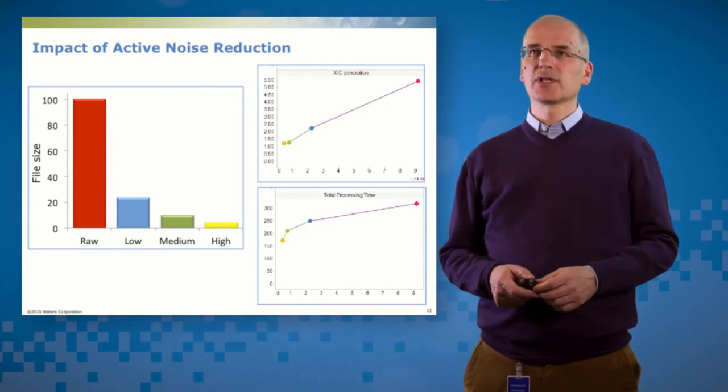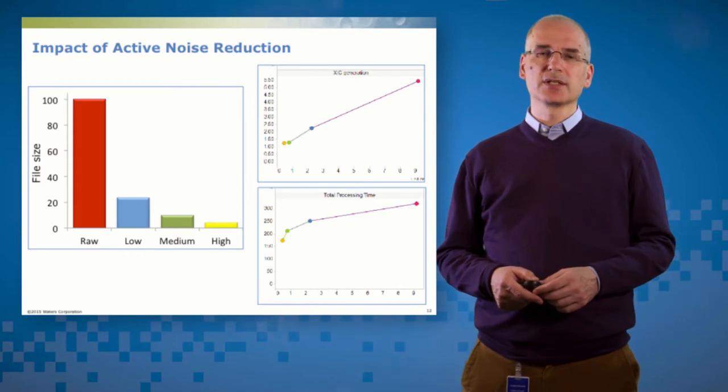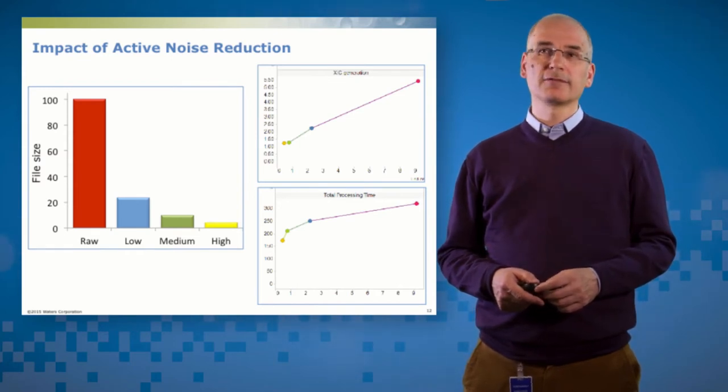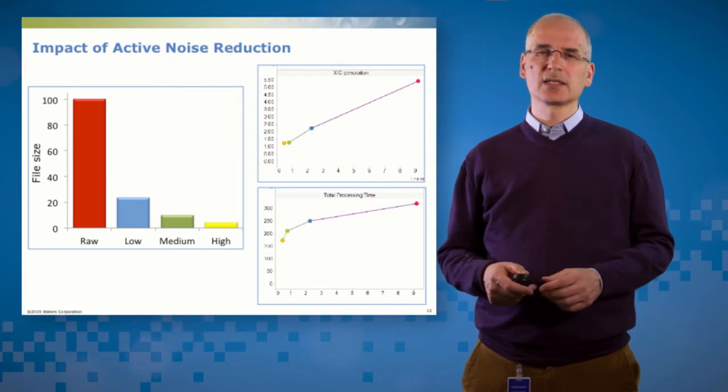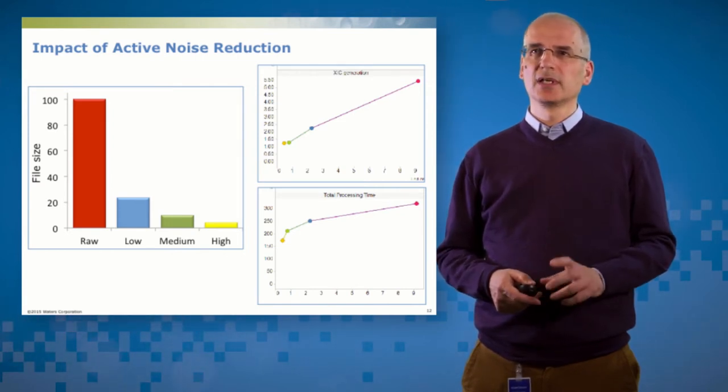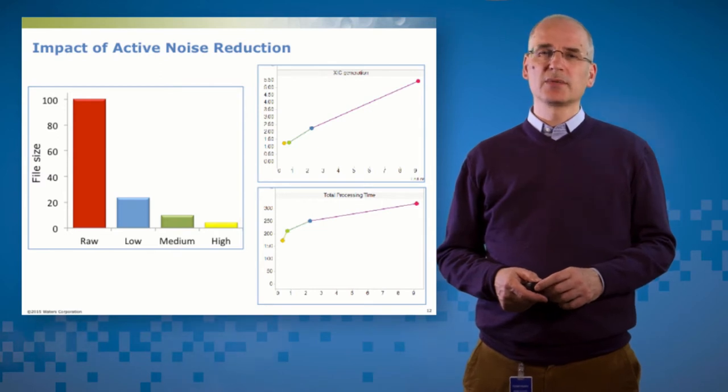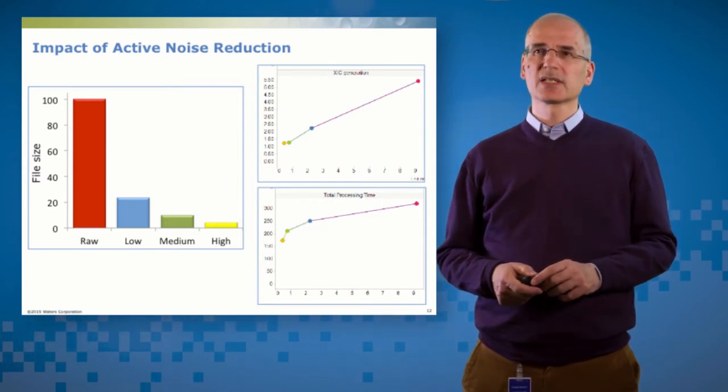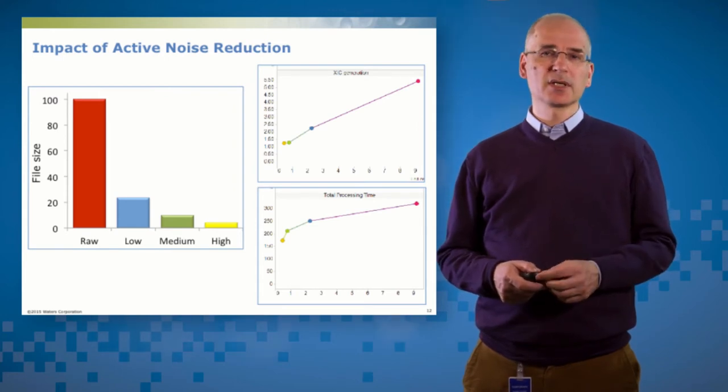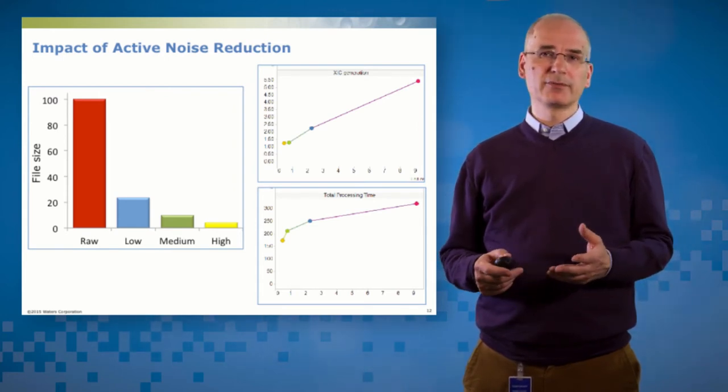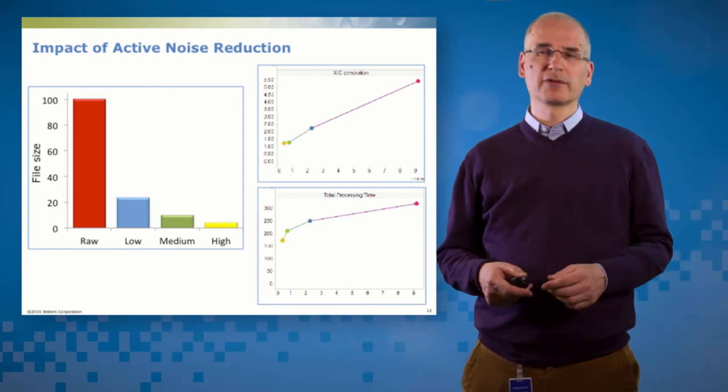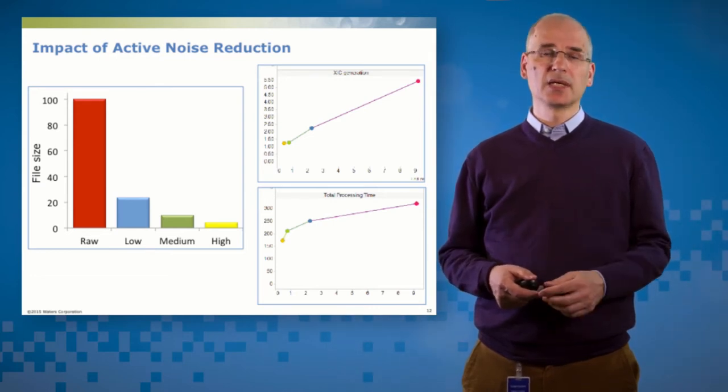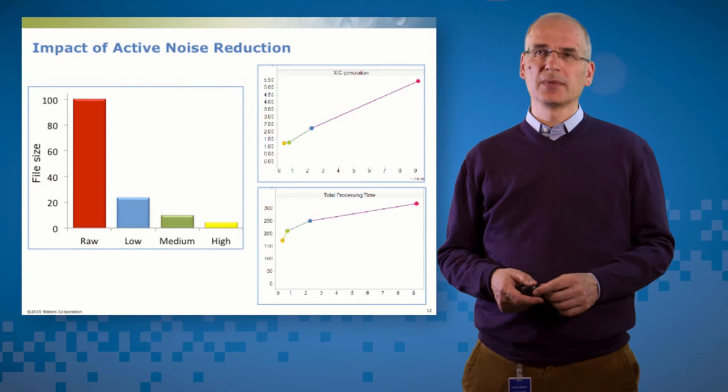Activities in the software which take time such as XIC generation scale linearly with file size. So you can see on that top right panel that as the files get smaller XIC generation gets faster. Interestingly total processing time doesn't scale quite that way because remember we're removing noise, we're not removing signal. And so once we've done the componentization we're hoping that we'll be left with a comparable number of signals which require interpretation. So although we get some improvements in processing time it's actually not unexpected that we don't get a linear reduction in total processing time.